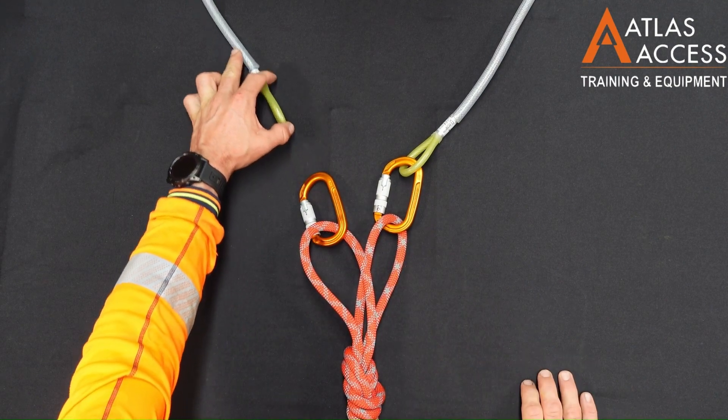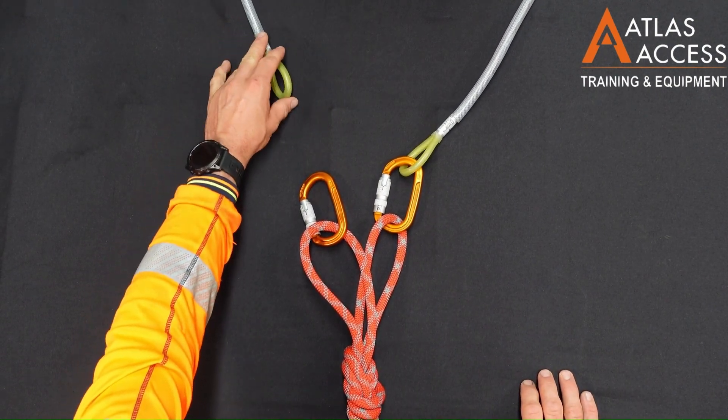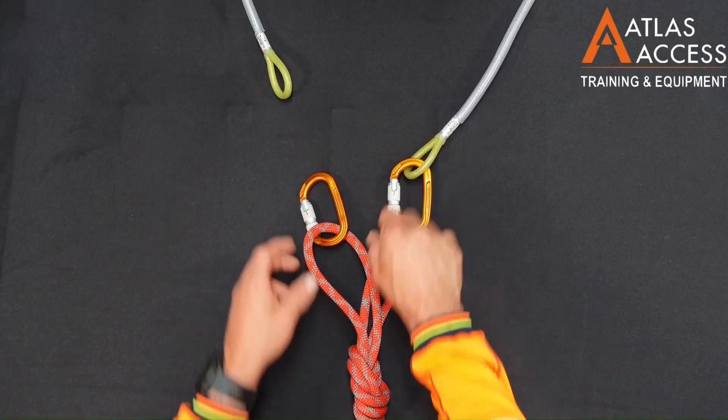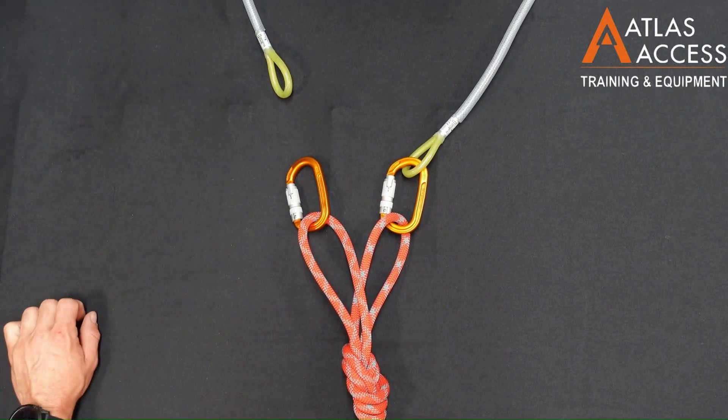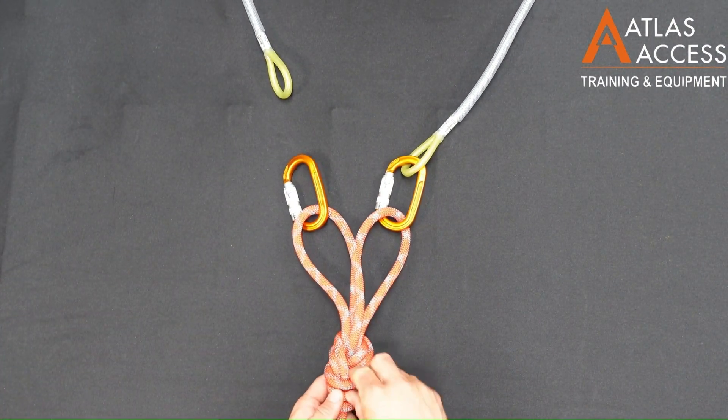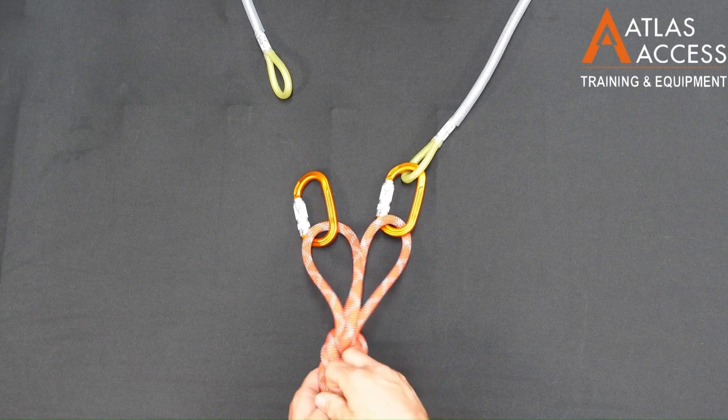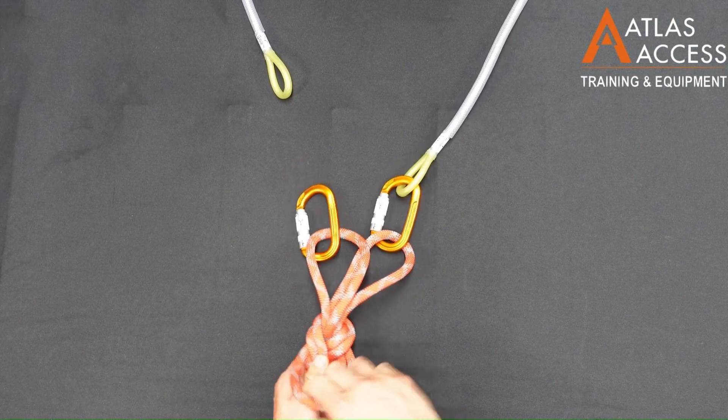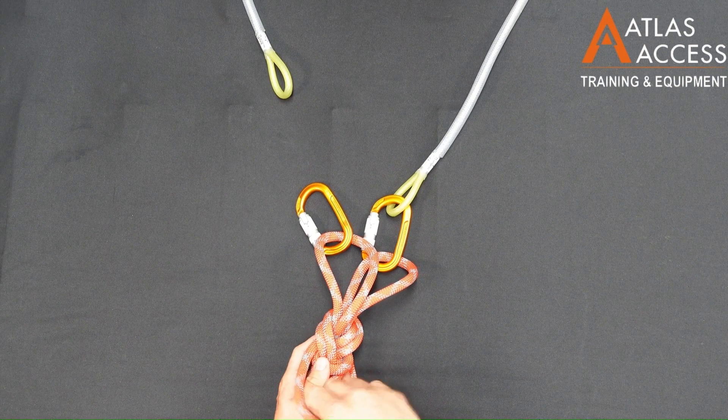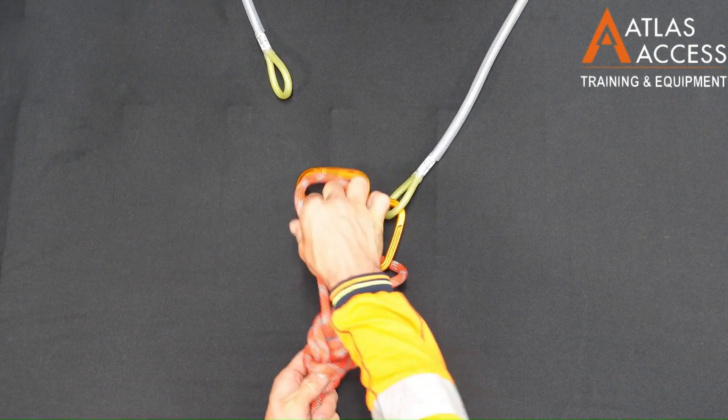If these anchors were offset, we can adjust the figure eight to accommodate. By pulling on the strand that was the loop, encapsulating the smaller loops, we can take rope out of both small loops.